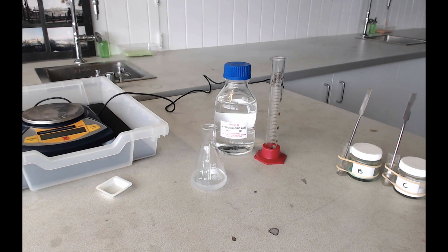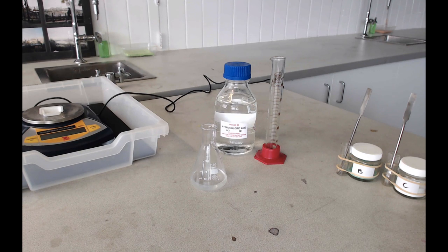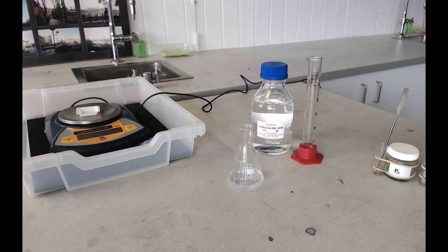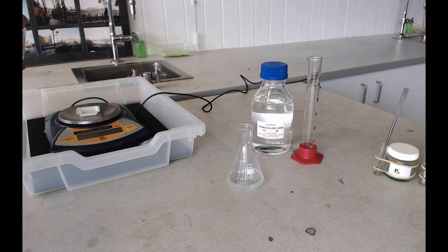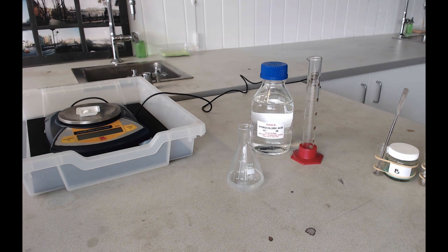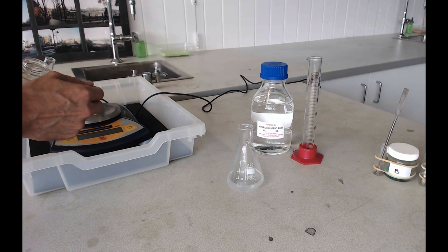Now the next thing you want to do is weigh out 2 grams of your carbonate using the balance and the weighing boat. 2 grams of each of these carbonates is around about 2 spatulas full. You want to be very careful when you're weighing these things out. Put your weighing boat on the balance, reset the balance, and then carefully place about 2 spatulas full of solid onto your weighing boat. The closer the jar is to the weighing boat, the less likely you are to spill the powder all over the balance.